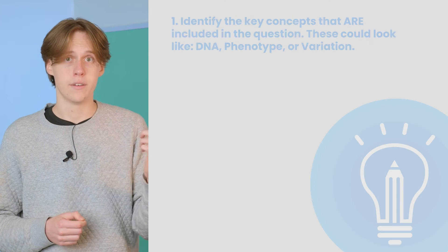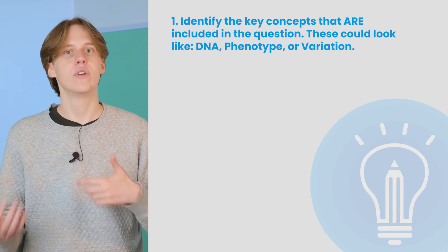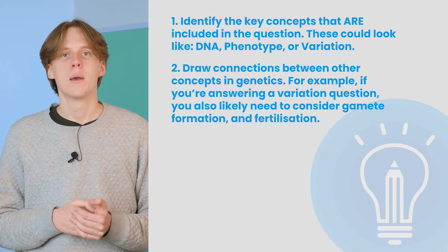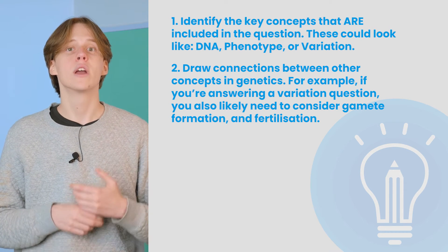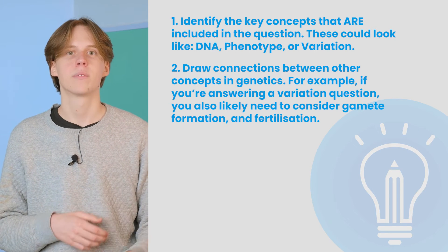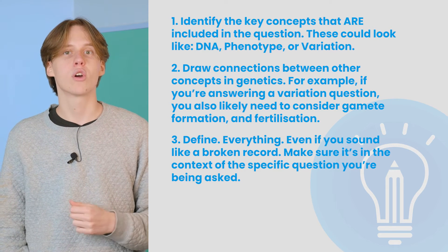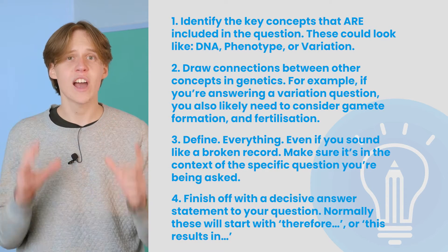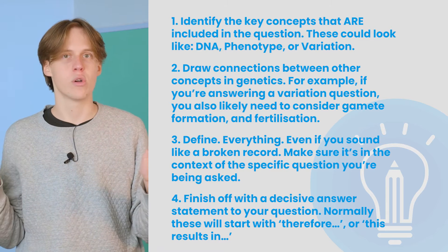Luckily there's a natural process you can use to unpack these sorts of questions. Step 1: identify the key concepts included in the question — these could include DNA, phenotype, or variation. Step 2: draw connections between other concepts in genetics; if you're answering a variation question, you likely also need to consider gamete formation and fertilization. Step 3: define everything, even if you sound like a broken record, in the context of the specific question. Step 4: finish off with a decisive answer statement, normally starting with 'therefore' or 'this results in'.